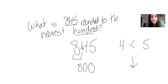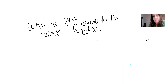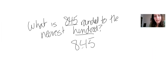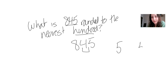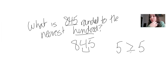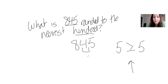Now say this question asked for the nearest tens place instead. We have 845 and we're looking at the tens place. We look to the right of the tens place — the ones place — and we see 5. What is 5 in relation to 5? It's equal to 5. Since our rule of thumb is to round up when the digit is greater than or equal to 5, we round the 4 up. So the answer would be 850.